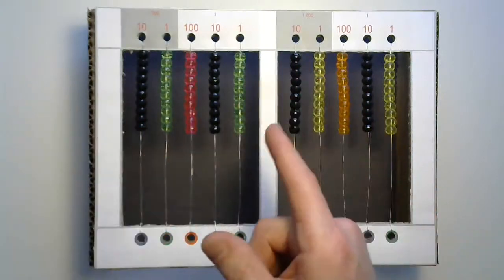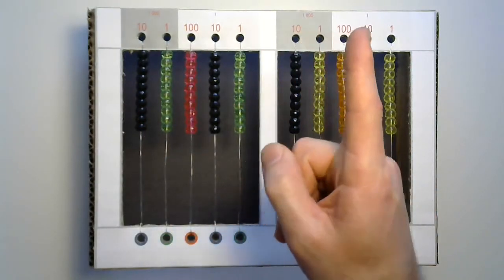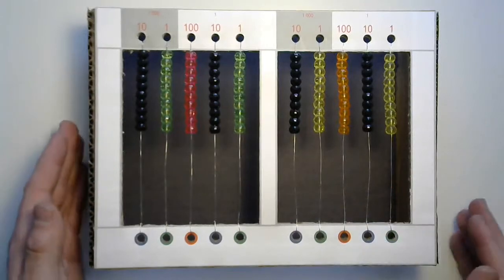Well, short division has one digit in the divisor. Long has more. And we're going to try one of those today.